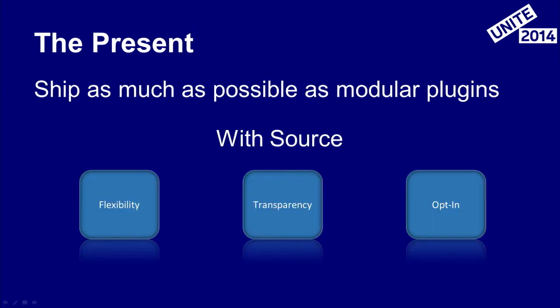What we've been looking to do is move as much as possible of the platform-specific functionality out of Unity and ship these with source to you guys. This gives us quite a bit of advantage: flexibility — you can take and gut them and use them as a starting place for your own projects; transparency — you can see how we've implemented things and investigate performance problems; and they're opt-in, which I'll talk about a little more later.